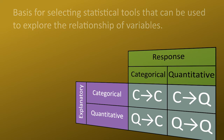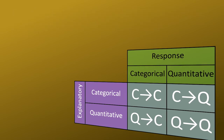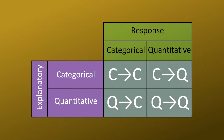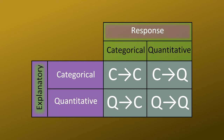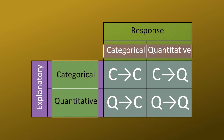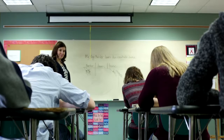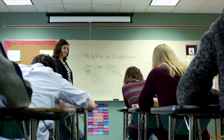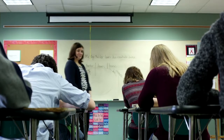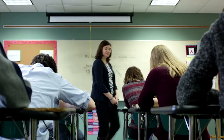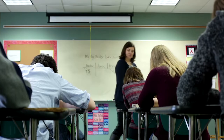You'll find that not only does it help you to construct graphs, but it's also the basis for selecting statistical tools that can be used to explore the relationship of variables that you're interested in. The tools for statistical analysis and for visually representing the relationship between variables are based on the role and type of each variable — whether response or explanatory, and whether categorical or quantitative. To get the hang of this, let's go back to some examples and determine which role type represents each research question.